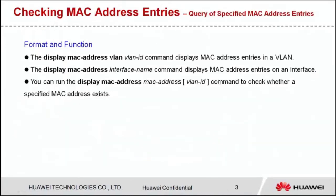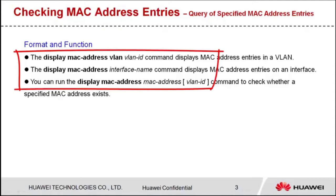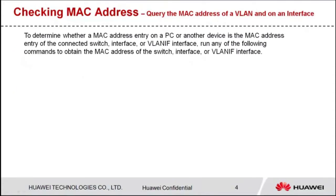We can also check specified MAC address entries — for example, MAC address entries in a specified VLAN or on a specified interface, or check whether a specified MAC address exists. The commands are as follows. Let's see how to query the MAC address of the device or an interface. To determine whether a MAC address entry on a PC or another device is the MAC address entry of the connected switch interface or VLAN interface, run any of the following commands to obtain the MAC address of the switch interface or VLAN interface.